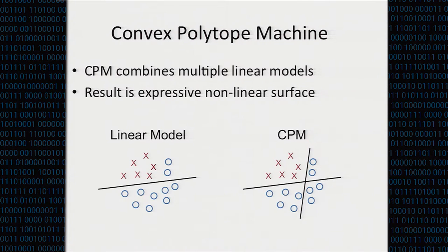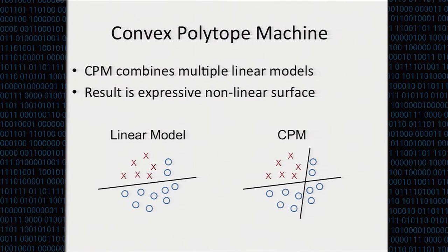Once features are vectorized, ordinal and continuous values are normalized to a bounded range. We apply a convex polytope machine, or CPM, which is an ensemble of linear subclassifiers. Rather than using a basic linear model like logistic regression or naive Bayes, the CPM introduces a nonlinear decision boundary, achieving higher detection rates in low false positive regions. We tried a couple of approaches and got the best results with this one.